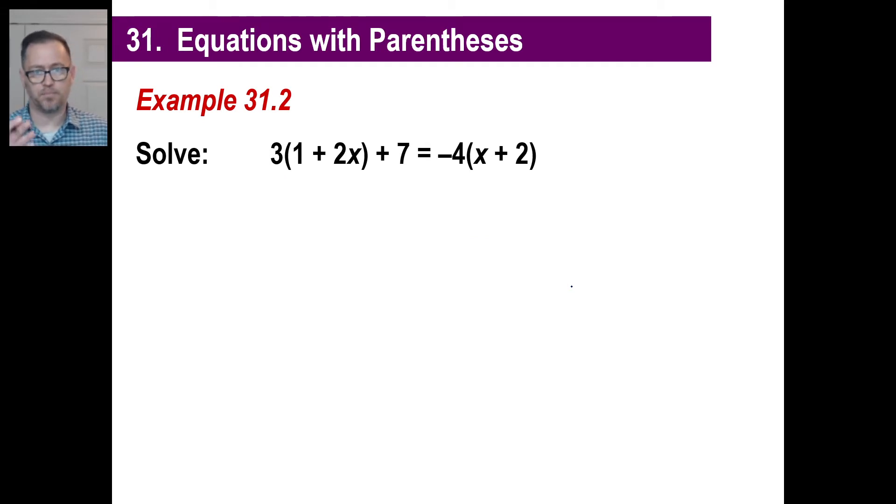Let's take a look at another one here. Go ahead and pause that and copy. This time you have parentheses that you're going to distribute on both sides. Who cares? We can do it once. We can do it twice. We can do it three times. Let's do the distribution here. Three times one is three. Three times two x is six x. And I'll carry down the plus seven. Negative four times x, negative four x. Negative four times positive two, negative eight, right?